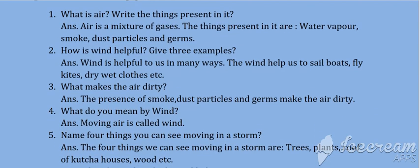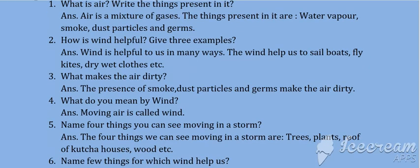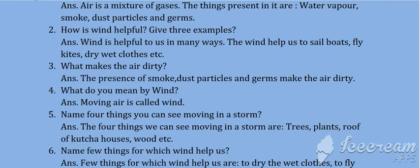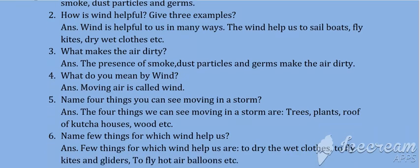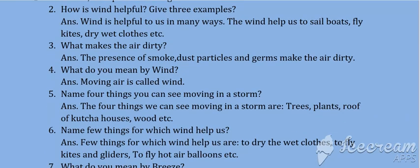Name four things you can see moving in a storm. Answer: The four things we can see moving in a storm are trees, plants, roof of kaccha houses, wood, etc. Name a few things for which wind helps us. Answer: Wind helps us to dry wet clothes, to fly kites and gliders, to fly hot air balloons, etc.